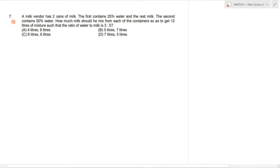A milk vendor has two cans of milk. The first contains 25% water and rest milk. The second contains 50% water. How much milk should he mix from each of the containers so as to get 12 liters of mixture such that the ratio of milk to water is 3 is to 5?